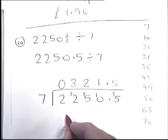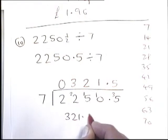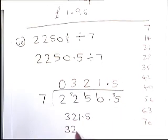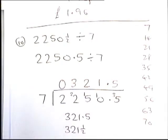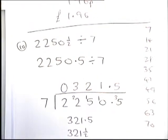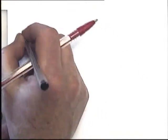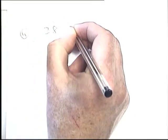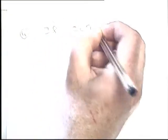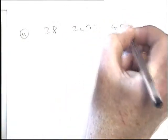The decimal point from the question appears directly above in the answer, giving 321.5. Remember 0.5 is the same as a half, so you could also write the answer as 321 and a half — both are correct. The next question, question 11, was an addition: 28 + 2097 + 497.